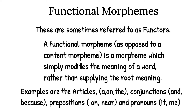A functional morpheme is a content morpheme — it is a morpheme which changes or modifies the meaning of a word rather than supplying the root meaning. For example, indefinite and definite articles are called functional morphemes, as are conjunctions like 'and' and 'because', prepositions, and pronouns. We call them functional morphemes because they serve a grammatical or structural role.